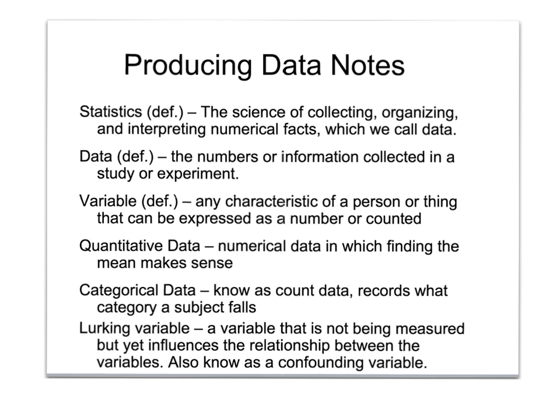The first few terms are pretty basic. Statistics is basically collecting numbers about some sort of experiment or observation — we call these numbers data. So statistics is just the science of interpreting data. Data is the numbers, and variables are whatever characteristic of a person or thing that we can count or express as a number — sometimes a mean, a median, or many different things we're looking at.